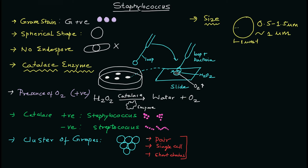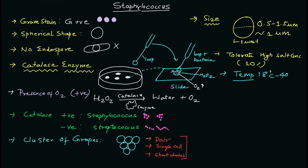The next important point is salt tolerance. This organism is highly tolerant to salt, so you can use this property to grow it under high salt concentration. The temperature range is also noted for this genus.